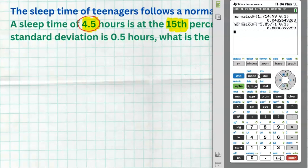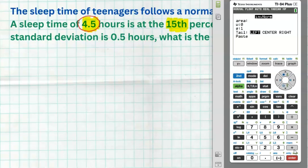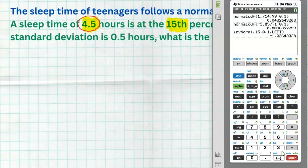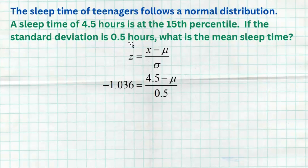This is where InvNorm is useful. Go to second VARS and select InvNorm — it gives you Z-scores when you provide an area. On newer TI-84 calculators you can specify left, center, or right tail; on older ones it automatically uses the left tail. Since percentile is the percentage below (to the left), leave it on left and type in an area of 0.15. This gives the Z-score with 15% below it: negative 1.036. On an FRQ, don't write 'InvNorm' — but you do have to show the Z-score. You could also use a normal table to look it up. Now substitute into the Z-score formula: the value 4.5 corresponds to Z = negative 1.036, and the standard deviation is 0.5. We don't know the mean — that's what we're solving for.